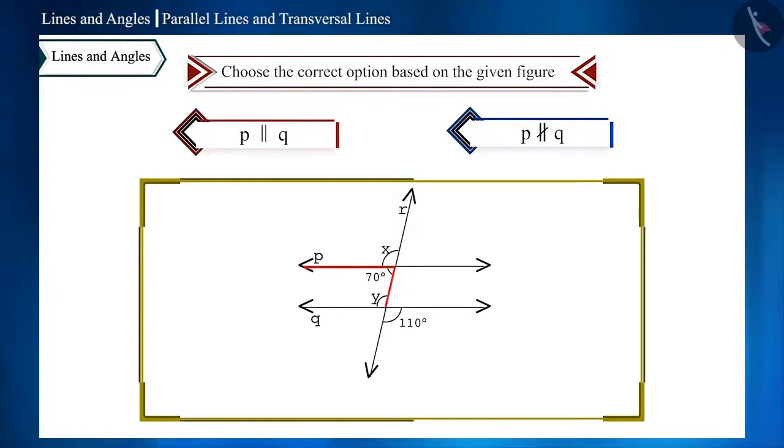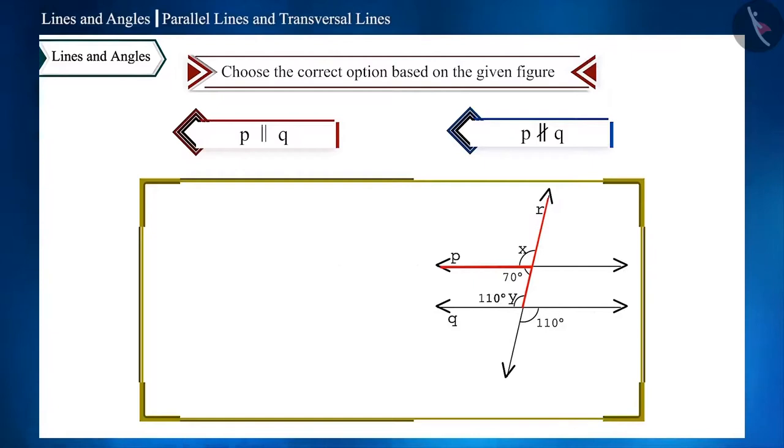The measure of this angle is 70 degrees and the measure of this angle is 110 degrees. These two angles are vertically opposite angles, so they will be 110 degrees. And these two angles form a linear pair. We get the measure of X as 110 degrees.